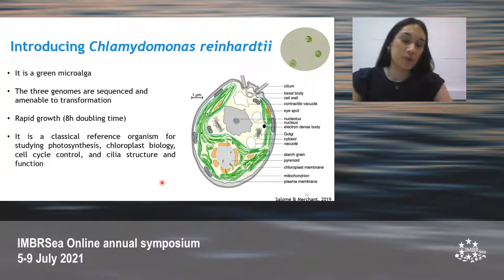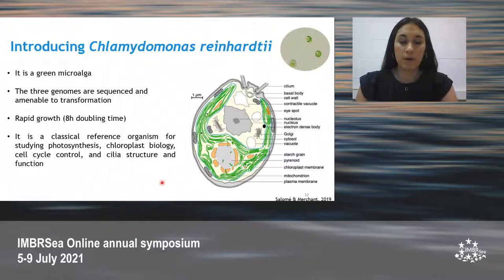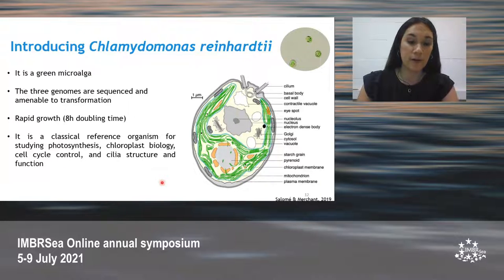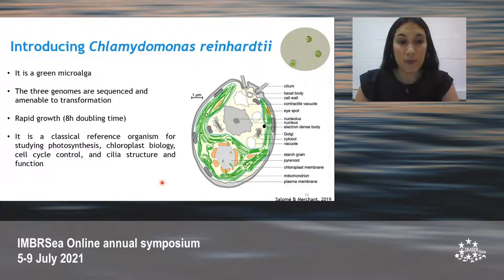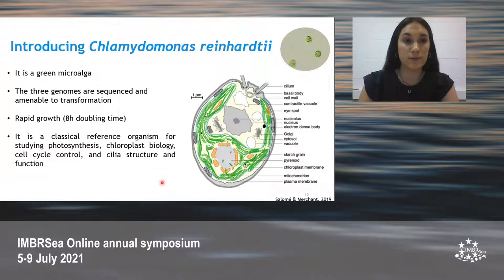Now, I would like to introduce the model organism that we employed for the heterologous expression of the proteins. This is a green microalgae whose mitochondrial, chloroplast, and nuclear genomes are sequenced and ready for transformation. This algae presents rapid growth, and it has served as a model organism for algae and for photosynthesis for decades in both basic and applied research.